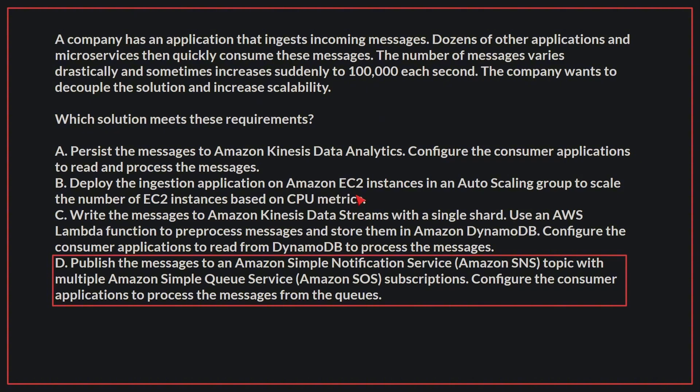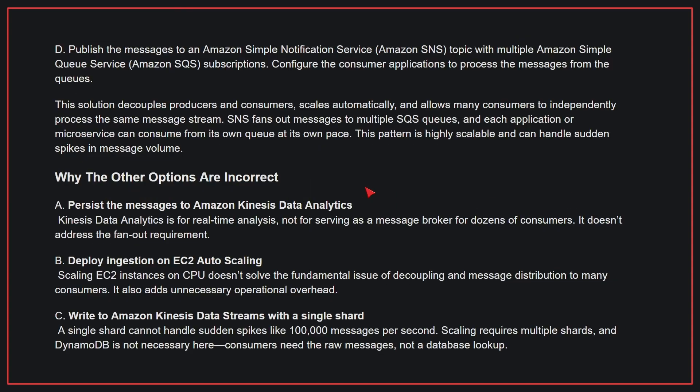The correct answer is D: Publish the messages to an Amazon Simple Notification Service topic with multiple Amazon Simple Queue Service subscriptions, and configure the consumer applications to process the messages from the queues. This solution decouples producers and consumers, scales automatically, and allows many consumers to independently process the same message stream. SNS fans out messages to multiple SQS queues, and each application or microservice can consume from its own queue at its own pace. This pattern is highly scalable and can handle sudden spikes in message volume.